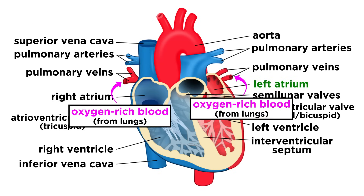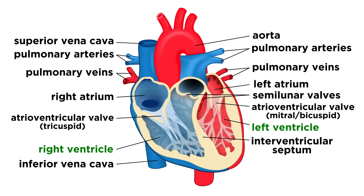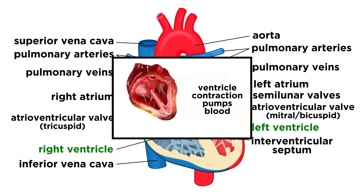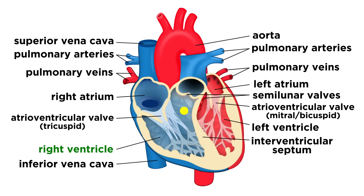For the left atrium, there are four entryways, and these are the pulmonary veins, which deliver blood from the lungs back to the heart. The ventricles make up much more of the volume of the heart, and these are the actual pumps. When the ventricles contract, that's what propels the blood out of the heart and into circulation. The right ventricle sends blood into the pulmonary trunk, which goes to the lungs, and the left ventricle sends blood into the aorta, which is an artery, the largest one in the body.